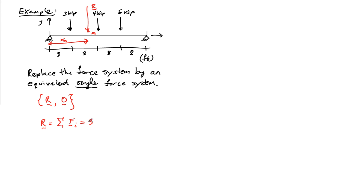Let's get the directions right. So it's minus 3 EY, minus 4 EY, and minus 5 EY. So this is equal to minus 12 EY, and the units are thousands of pounds.